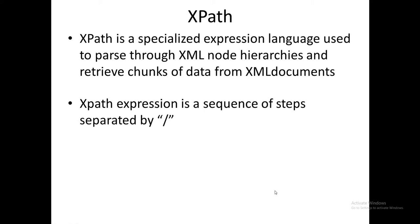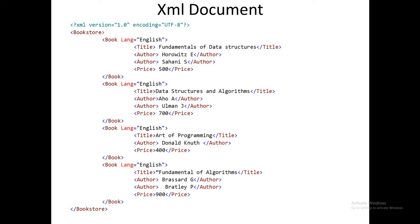Now let us see examples of XPath. Before the examples, first have a glance at the XML document. I have taken one XML document which includes a bookstore as the root element. It includes multiple occurrences of book elements, where book is a complex element that further includes sub-elements like title, author, and price. Multiple occurrences of authors are present, and the book element has one attribute: language.